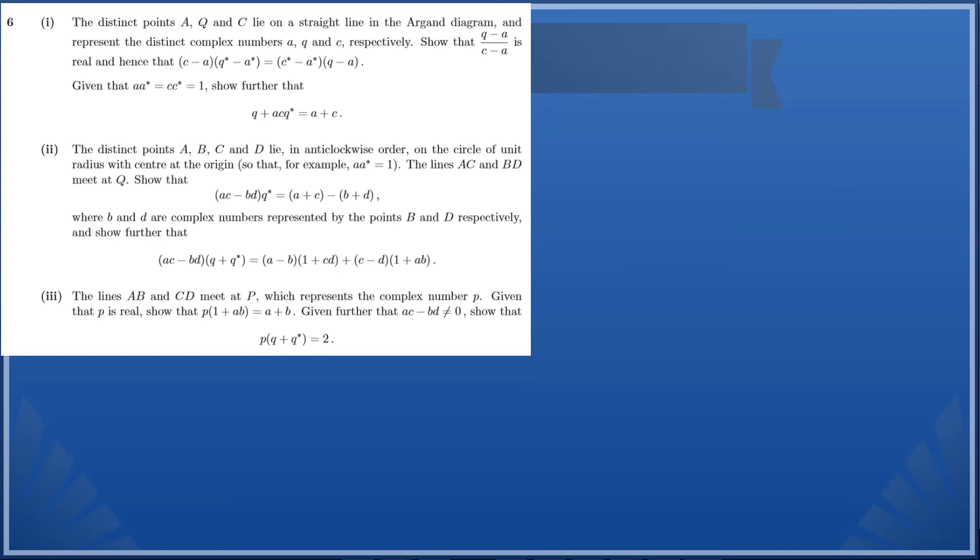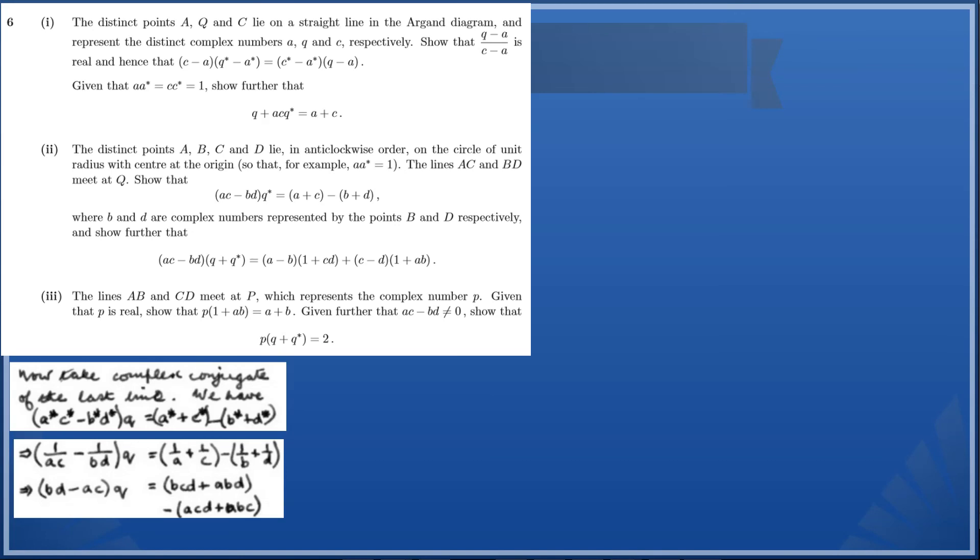Now let's move on to the next part. Let's take the complex conjugate of the previous result which we've just proved. So we have (a*c* - b*d*)q = a* + c* - b* - d*. Now by getting rid of the stars and using the identity elements, we can see that (1/ac - 1/bd)q = 1/a + 1/c - 1/b - 1/d. Then what we can do is get rid of the denominator on all the individual terms. It very quickly follows that we've got something that's on its way to proving the result which we want. We've got rid of all the stars.